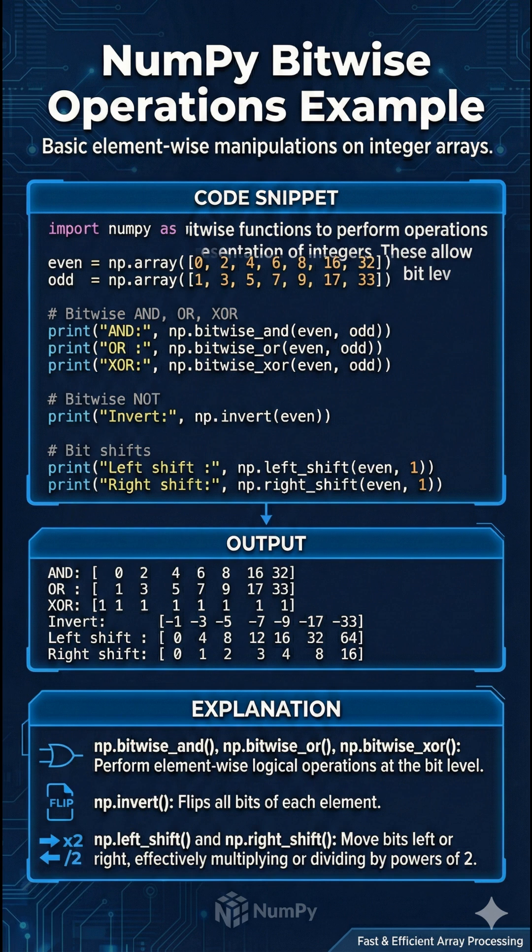The example then applies np.invert to the even array, which flips every bit to yield negative 2's complement values, e.g. 0 becomes -1.